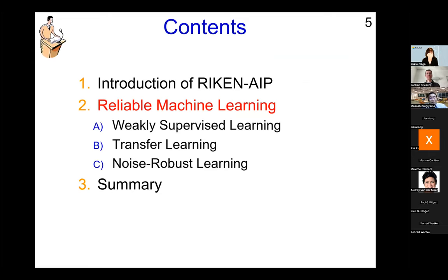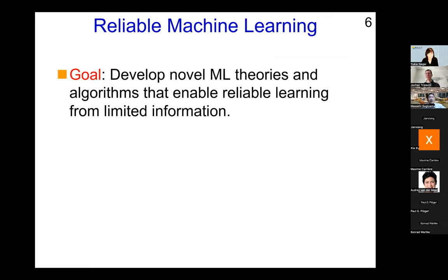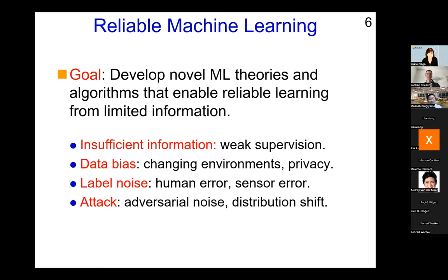Now let's come to the main part of my talk: reliable machine learning. The goal is to develop novel machine learning theories and algorithms that enable reliable learning from limited information. We are working on four topics: learning from insufficient information (weakly supervised learning), learning from biased data — because of changing environments or privacy concerns, data is essentially biased, and we need to de-bias or train predictors in an unbiased way. This is essentially the same as transfer learning or domain adaptation.